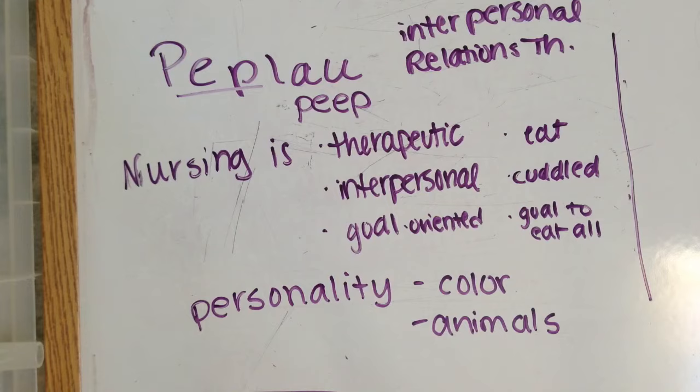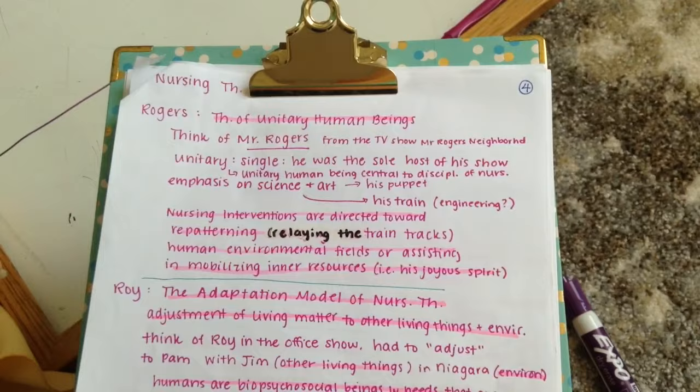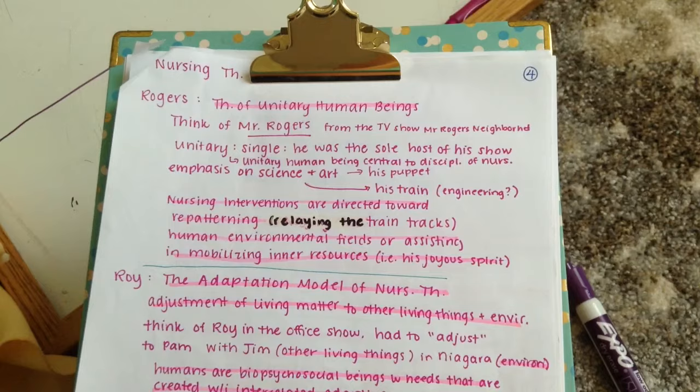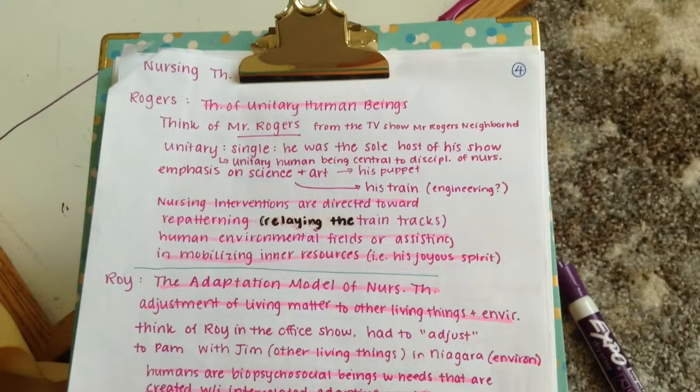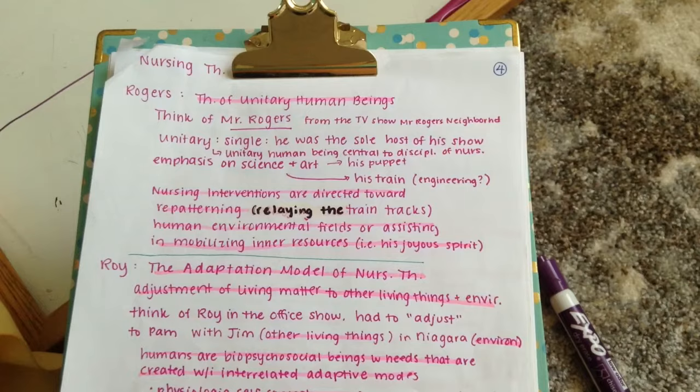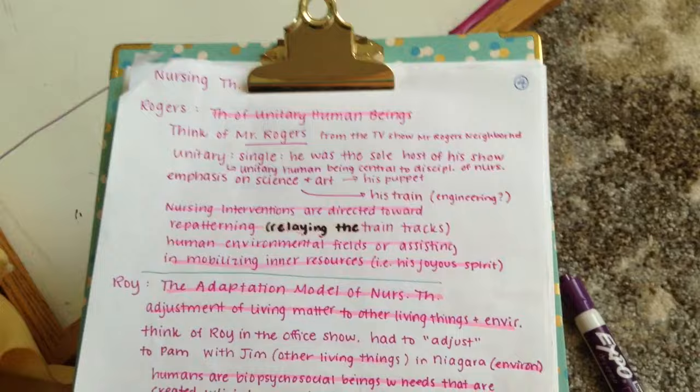Rogers' theory was the theory of unitary human beings. I thought of the show Mr. Rogers' Neighborhood — he was the sole host, therefore a unitary being. He had an emphasis on science and art — think of his puppets and train tracks. Nursing interventions are directed towards repatterning human-environmental fields or assisting in mobilizing inner resources. Just think of Mr. Rogers smiling and waving at you, telling you that you can do a great job on this exam.